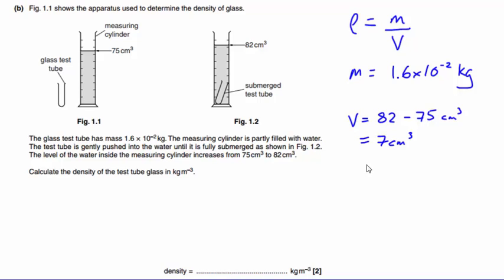We need that to be in meters cubed. A good tip for converting from centimeters cubed to meters cubed: there are 100 centimeters in a meter, which means there is 100 squared centimeters in a meter squared, or 100 cubed centimeters cubed in a meter cubed.